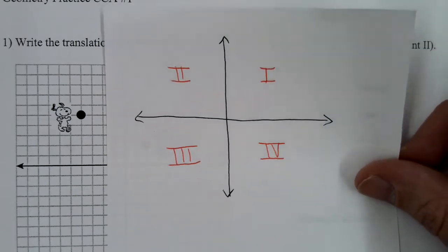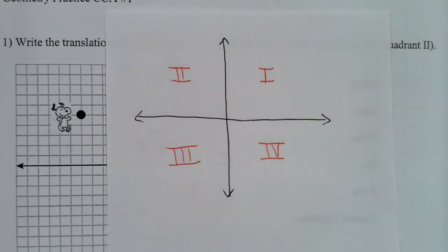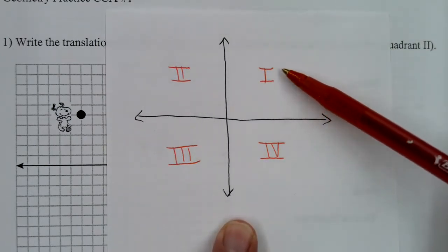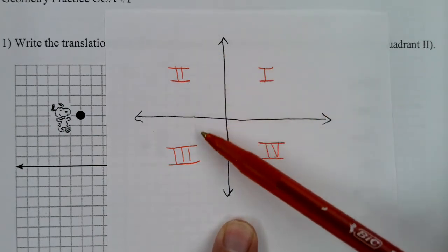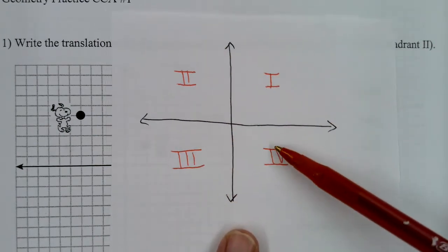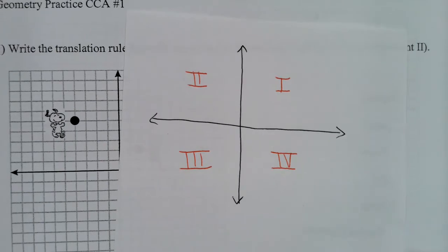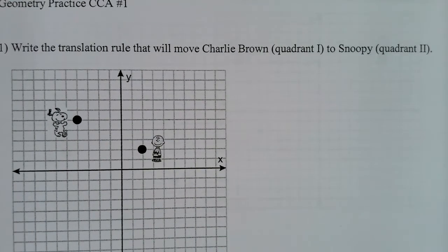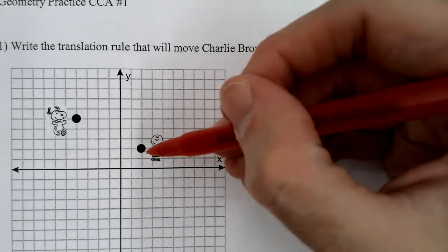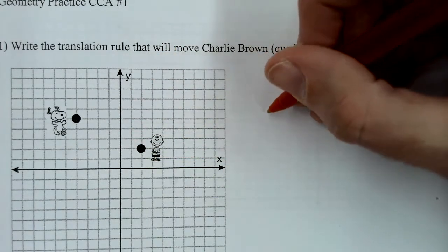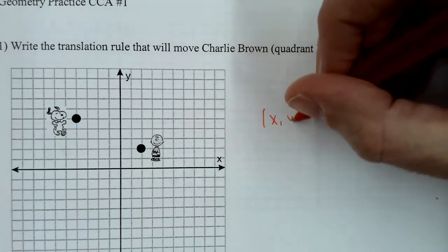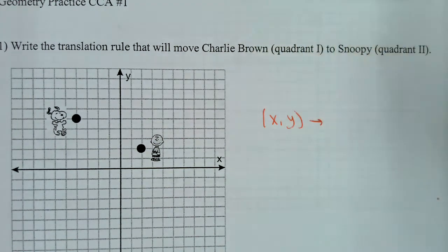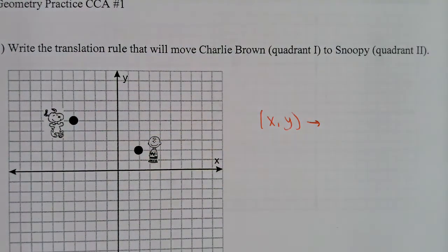Just to refresh your memory: quadrant one is here, quadrant two is there, quadrant three is there, and quadrant four is there. So we're going from Charlie Brown to Snoopy, and you have to write the translation rule. Translation rules look like this: XY maps onto, and we're going to count from Charlie Brown to Snoopy.